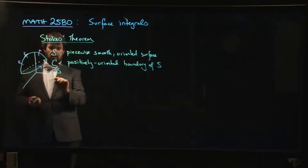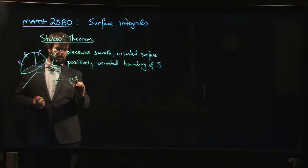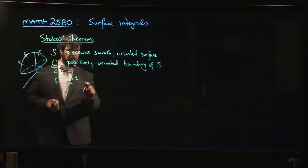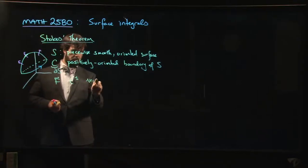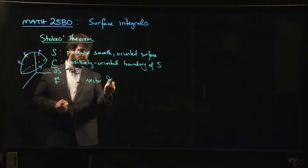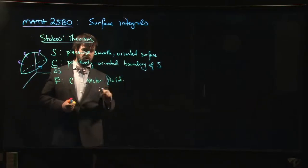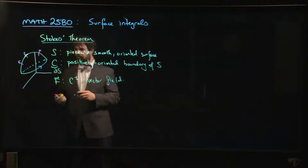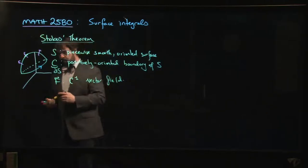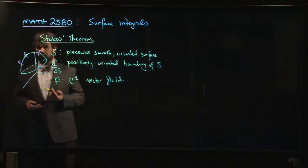And the last ingredient for Stokes' theorem is you need a vector field. So you have to have a continuously differentiable vector field. And again, it should be continuously differentiable everywhere on the surface.